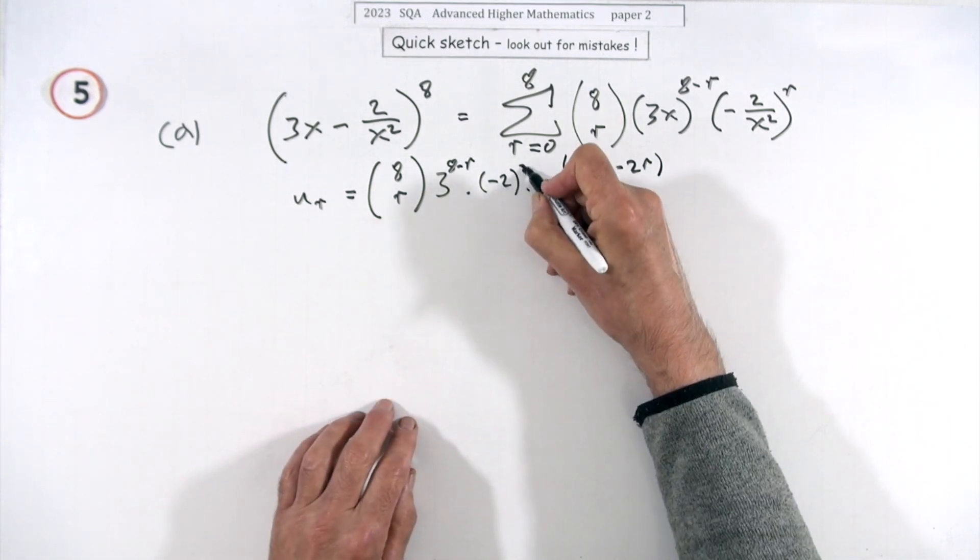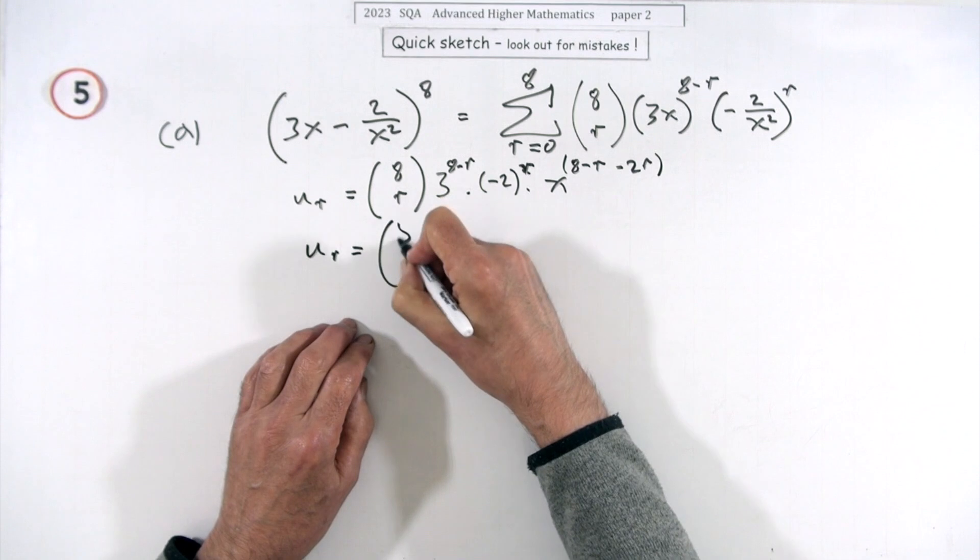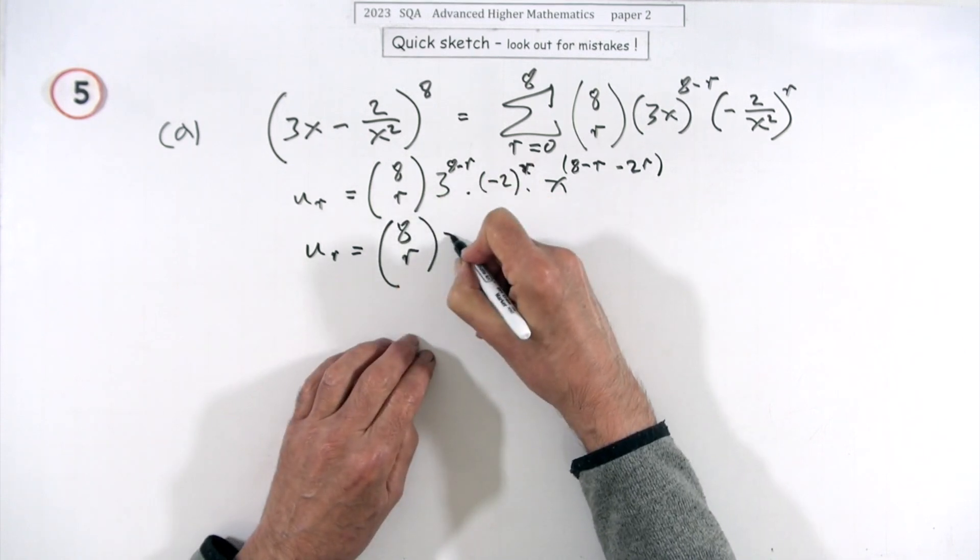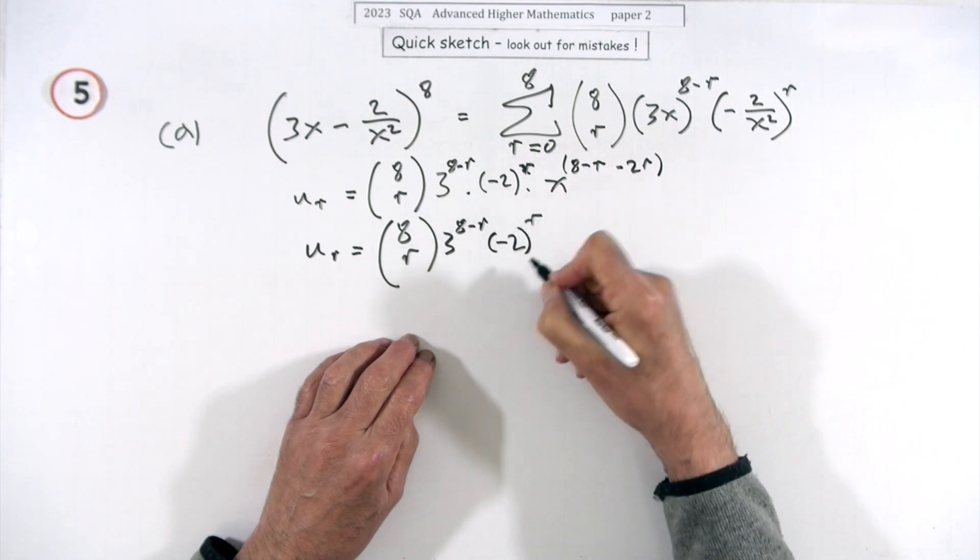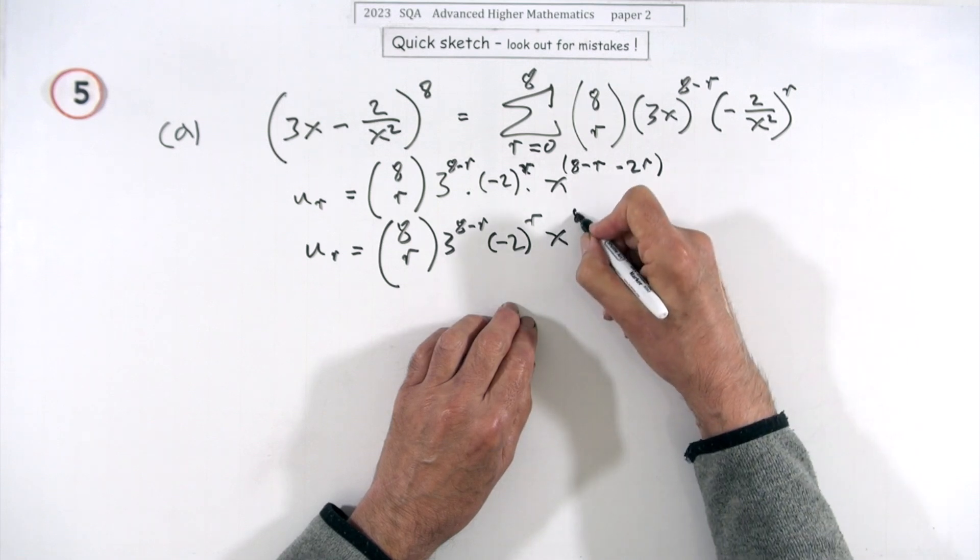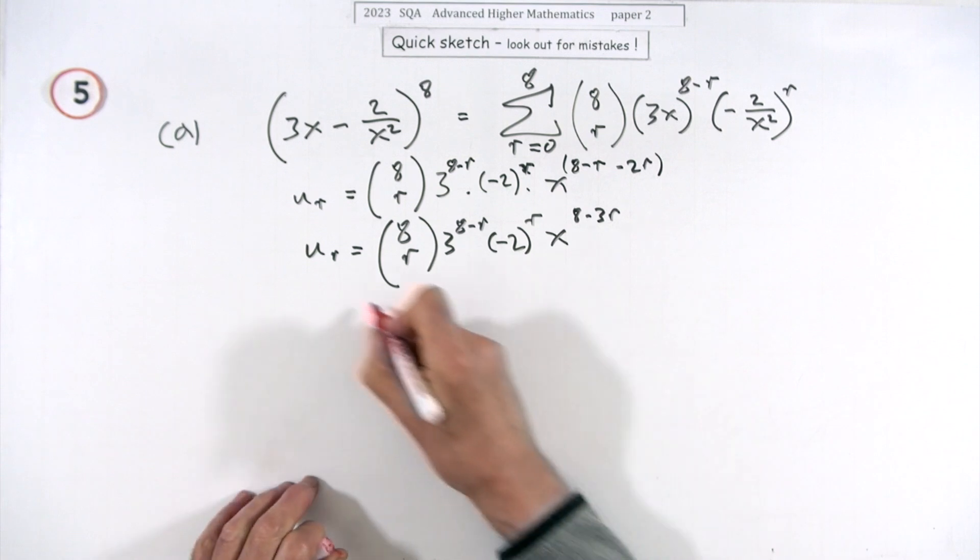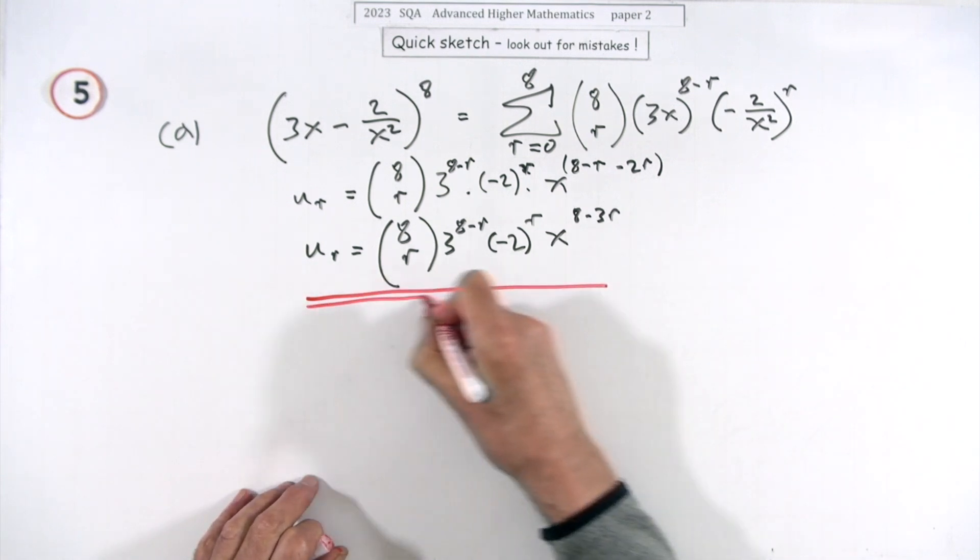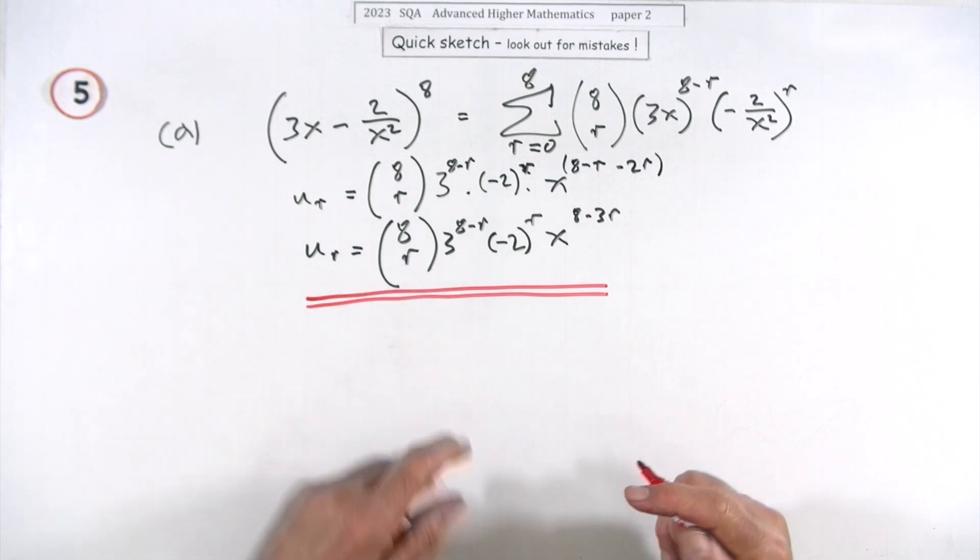So tidying up, well not a lot you can tidy up. It'll just be the power of x because I don't know what that is and I can't even do anything with that negative. I don't want to put an extra wee statement for negatives, but with that times x to the eight minus three r. Of course with this, the very first term would have to be u_0 because r starts at zero.